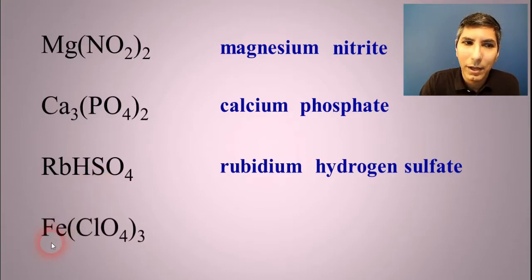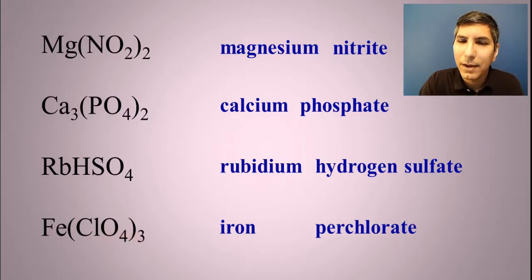And then we have something like this. Fe is iron. And then ClO4 would be called perchlorate. Now, you might realize that iron is a transition metal. So we have to go back here and figure out what's the charge of that iron.